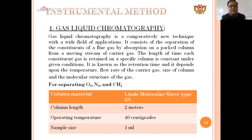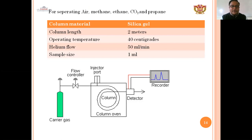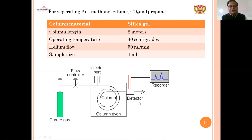For separating oxygen, nitrogen, and methane: column length 2 meters, operating temperature room temperature, sample size 1 mL. For separating methane, ethane, carbon dioxide, and propane: column material is silica gel, column length 2 meters, operating temperature 40°C, helium flow 50 mL/min, and sample size 1 mL. The diagram shows how flue gas analysis is done — a carrier gas flows through a flow controller to an injector port, a column oven, and a detector that detects the percentage of flue gases.